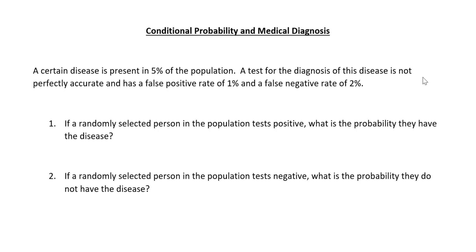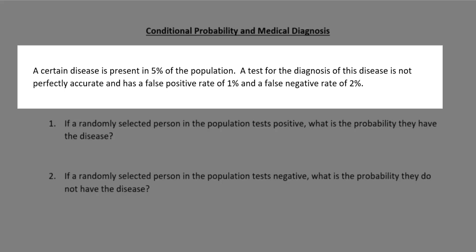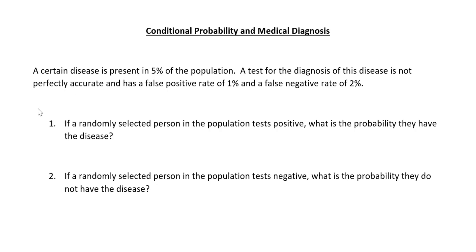So the question says a certain disease is present in 5% of the population. A test for the diagnosis of this disease is not perfectly accurate and has a false positive rate of 1% and a false negative rate of 2%. Number one: if a randomly selected person in the population tests positive, what is the probability they have the disease? And number two: if a randomly selected person tests negative, what is the probability they do not have the disease?